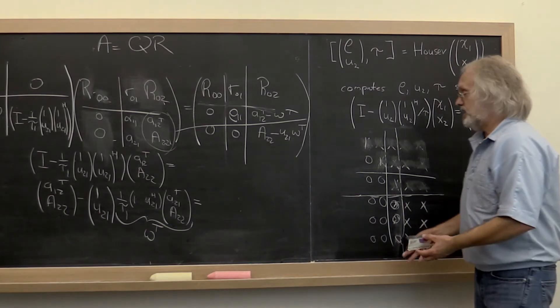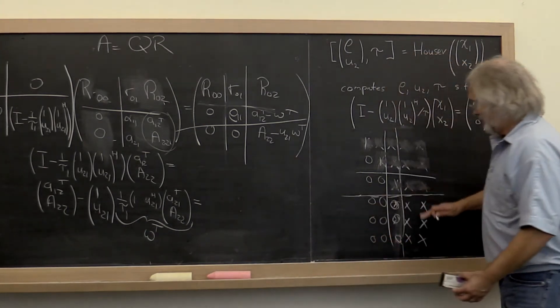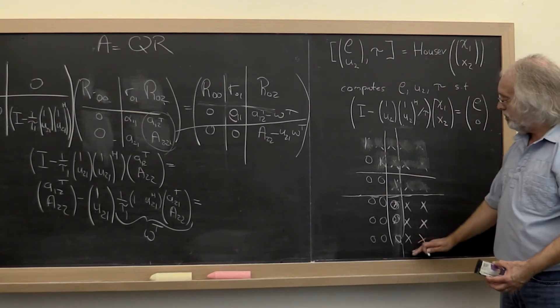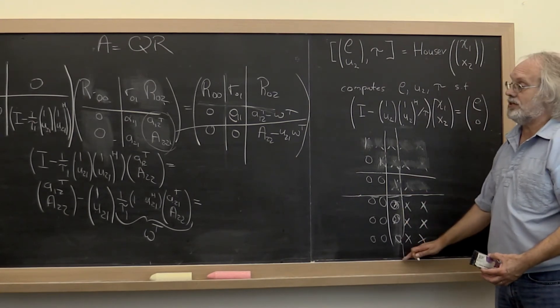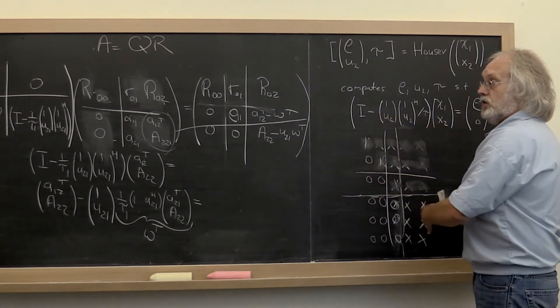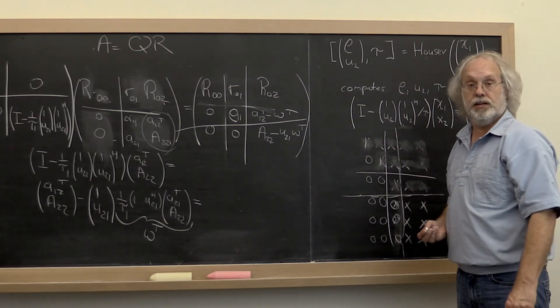So what you notice is that, again, the exact same kind of update needs to happen to this matrix that actually happened when you did the QR factorization in the first place.